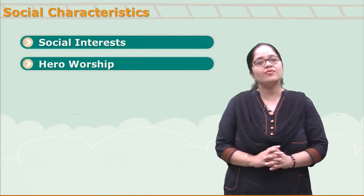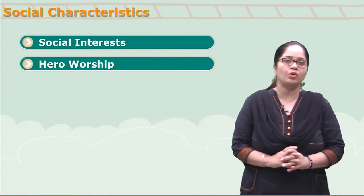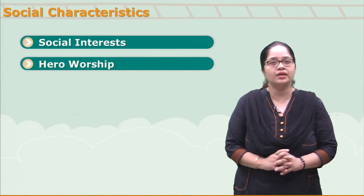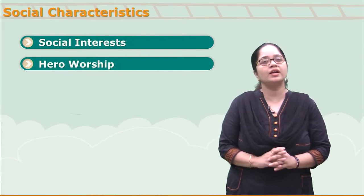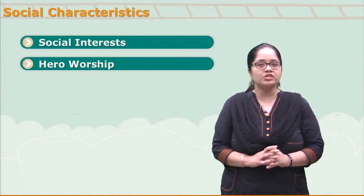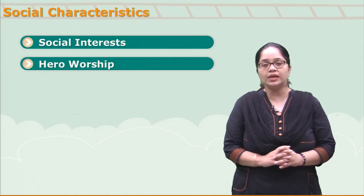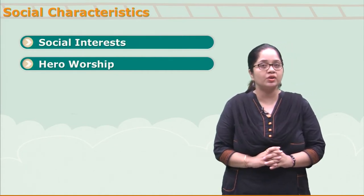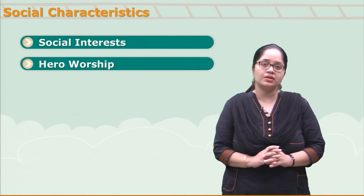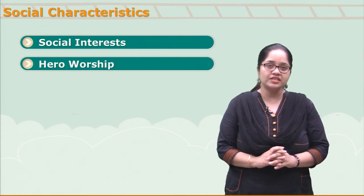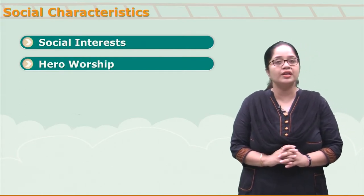Hero worship. This is a very interesting stage when they start considering someone as their role model and try to imitate their behavior, changing their attitude and values based on that role model. It is very crucial that teachers and parents are aware of whom teenagers are admiring. It will be advisable to encourage teenagers to read the biographies of great people.